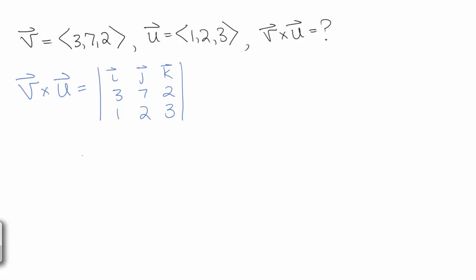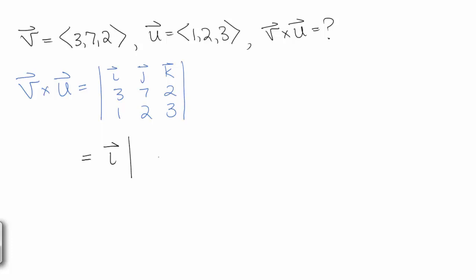We're going to do this in three pieces. The first thing we need to do is find the I piece. For the I piece, we take just the part of this matrix that doesn't involve the row or column that I is in. If we cross out the row and column I is in, that leaves us with 7, 2, 2, 3.